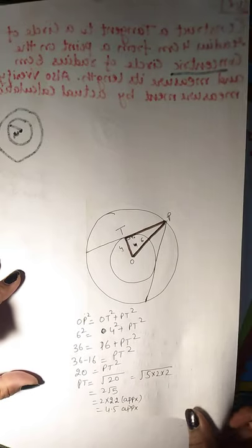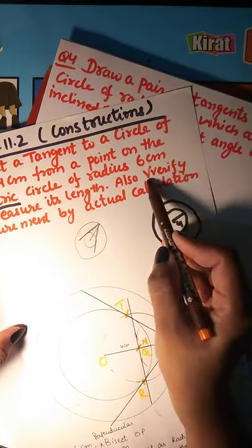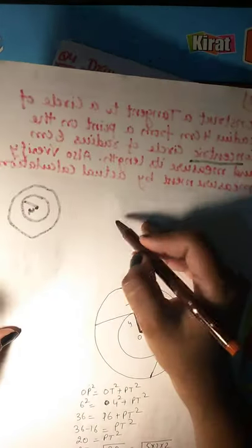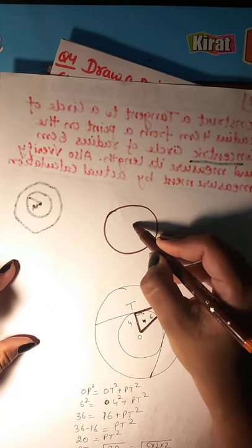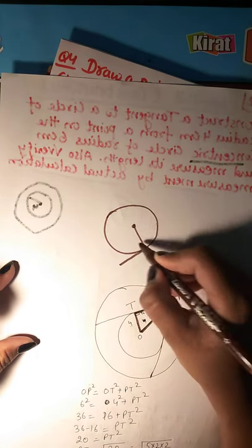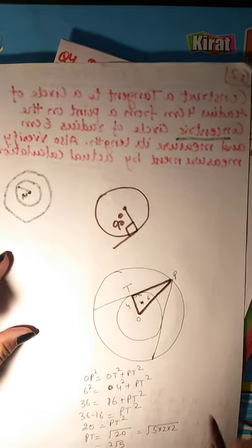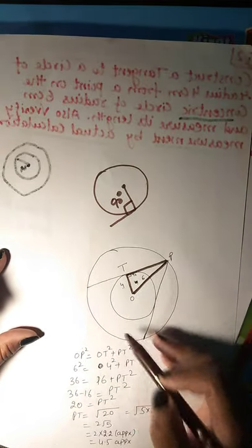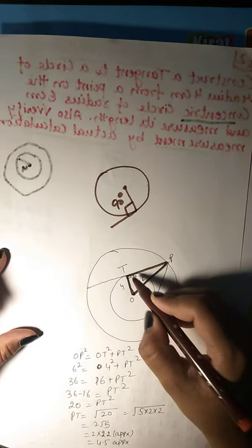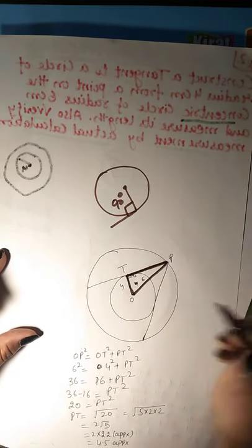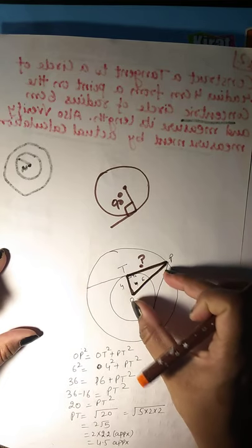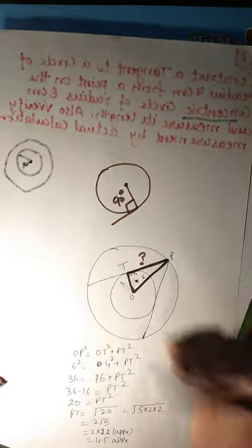Now look, here it was written verify the measurement by actual calculation. Now look we are doing it with Pythagoras theorem. I told you in circle introduction that the radius from center to tangent makes what angle? 90 degrees. So now look this is your figure you have drawn. This is your radius which is 4 cm and this length we have to find and this is the big circle's radius so this is 6 cm. So you have to find PT.